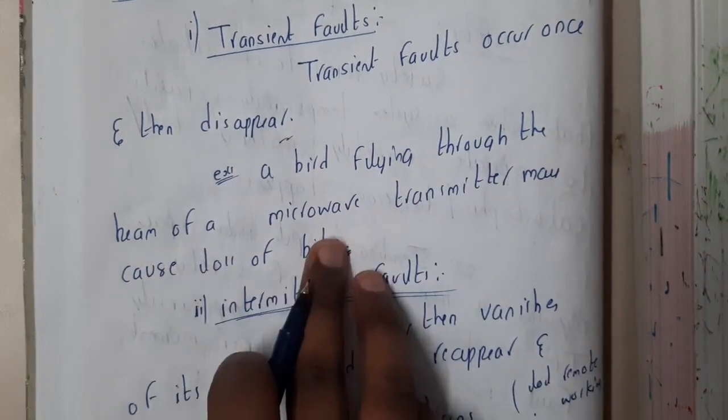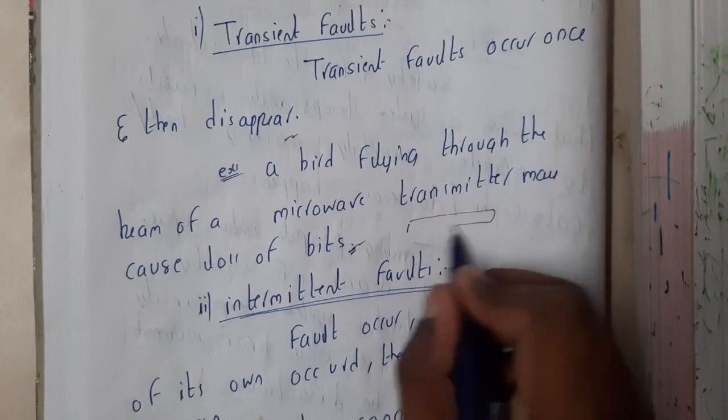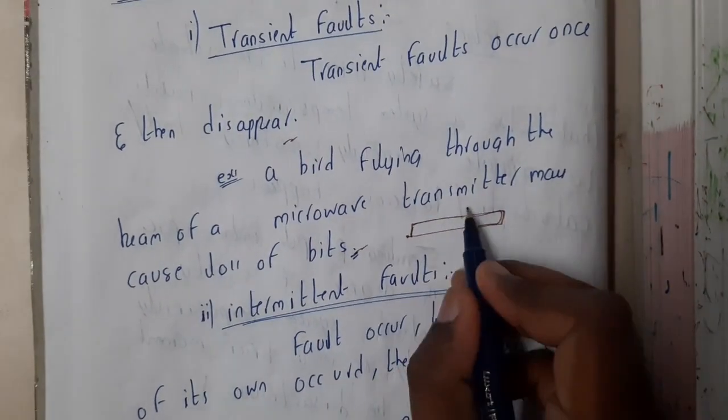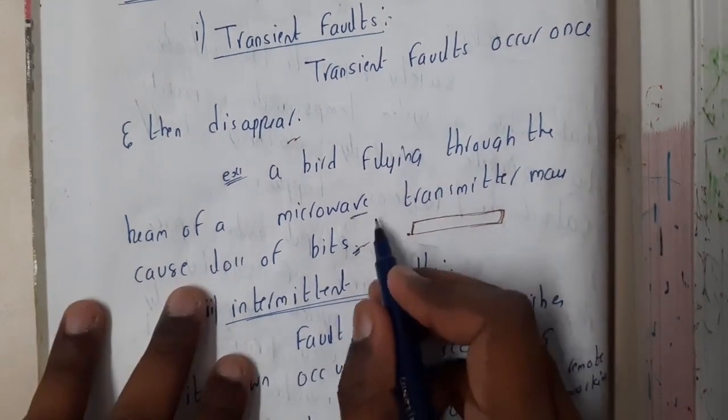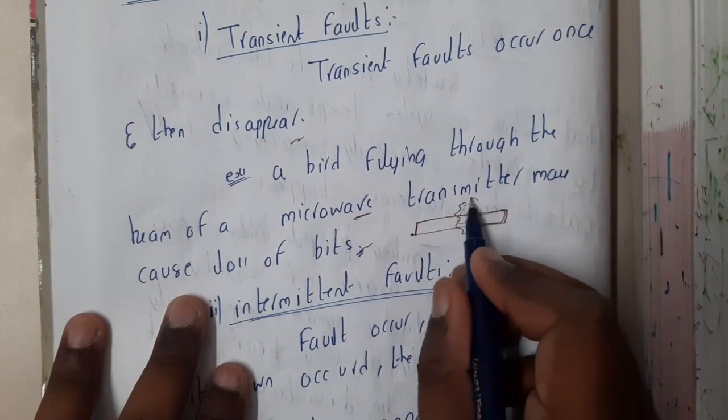An example could be a bird flying through a beam of microwave transmission, causing loss of bits. Assume that data is transferring through air via microwaves. If a bird comes in between, the bits are lost and corrupted.